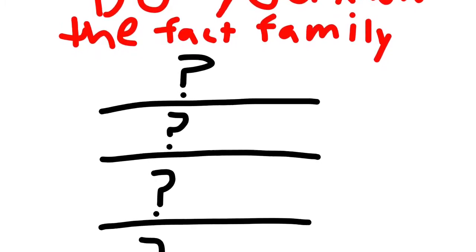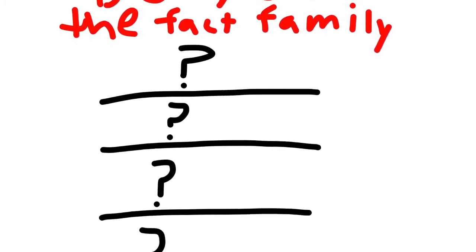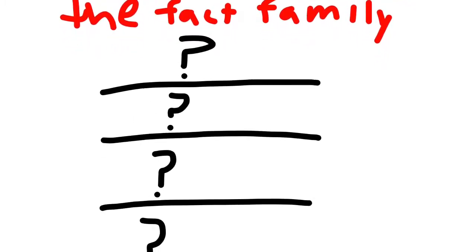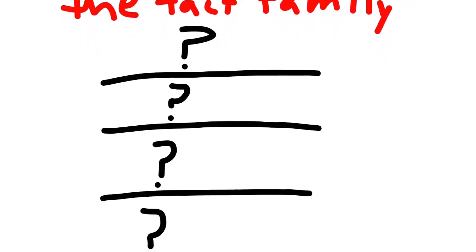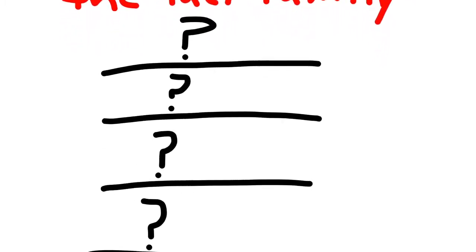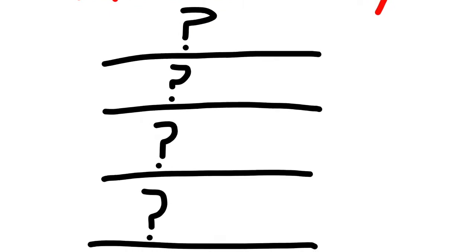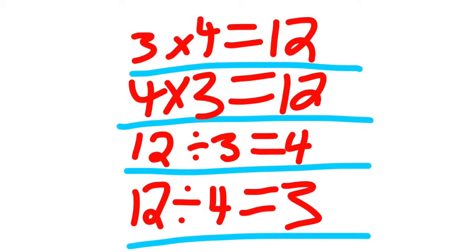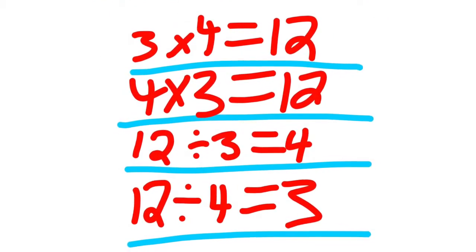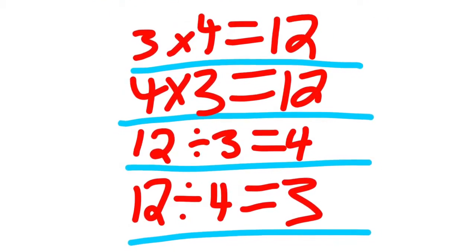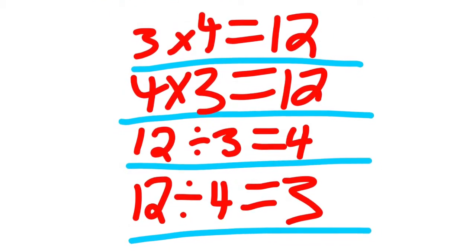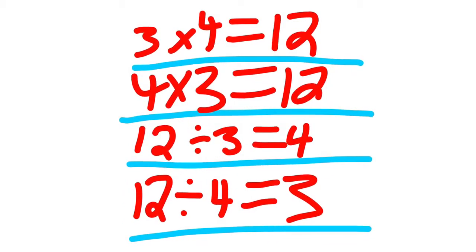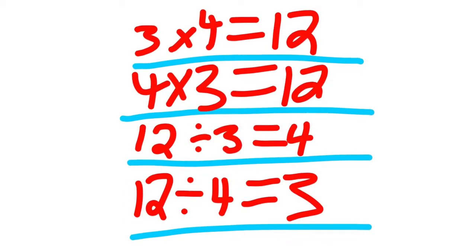Do you know the fact family? Three times four equals twelve. Four times three equals twelve. Twelve divided by three equals four. Twelve divided by four equals three.